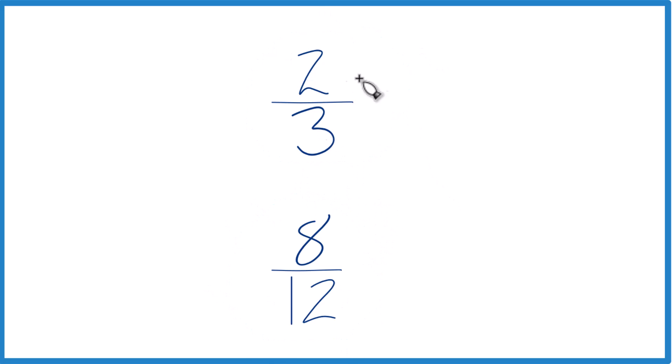You could just use the calculator. Divide two by three, you get a decimal. Eight by twelve, get a decimal, and compare the decimals. That'll tell you if two-thirds is greater than or less than eight-twelfths.